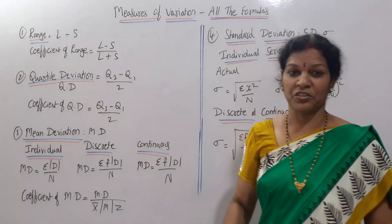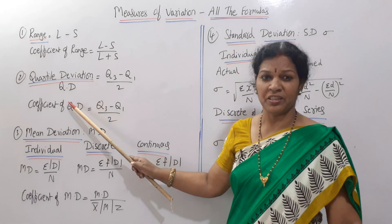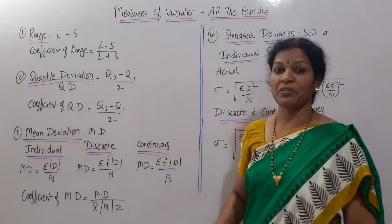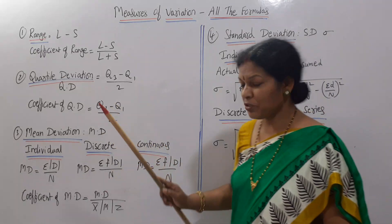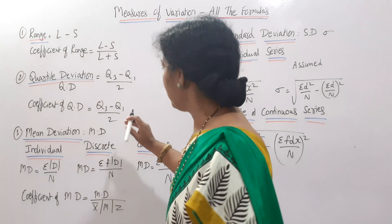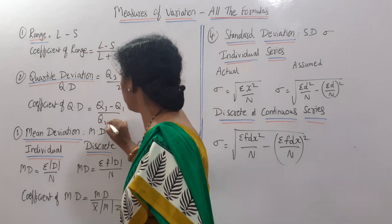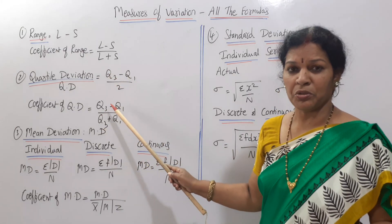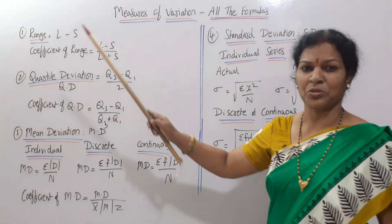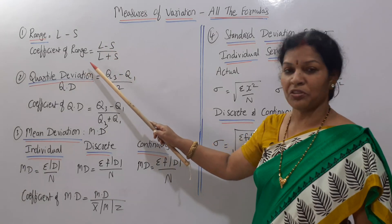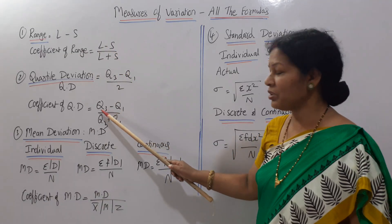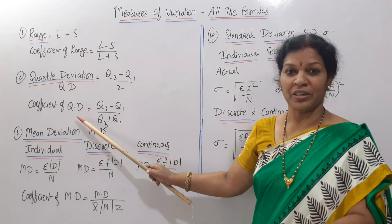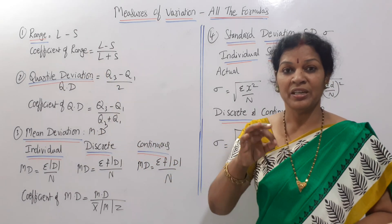Next, quartile deviation — we call it QD in short. The formula for QD is Q3 minus Q1 by 2. The coefficient of quartile deviation is Q3 minus Q1 by Q3 plus Q1. This mirrors the range formula: range uses L minus S, and coefficient uses L minus S by L plus S. Similarly, QD uses Q3 minus Q1, and its coefficient uses Q3 plus Q1 in the denominator. Both range and quartile deviation formulas are applicable for individual, discrete, and continuous series.